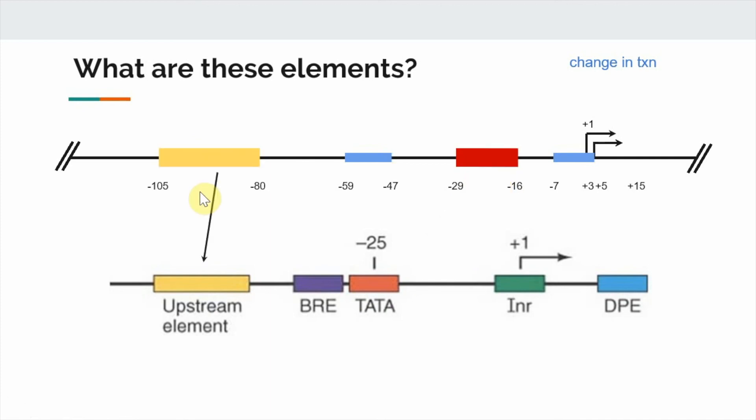Now let's talk about this larger element upstream from minus 105 to minus 80. It is most likely some sort of upstream element, as they are typically located a decent distance away from the plus 1 and are important for wild-type transcription. This region from minus 59 to minus 47 is probably also an upstream element, as it is still located a decent distance away from the plus 1.